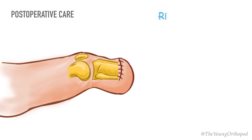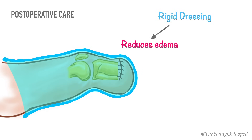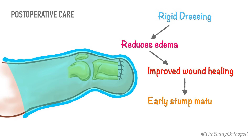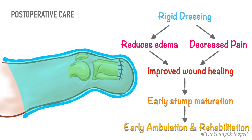Post-operatively, a rigid dressing consisting of a plaster of Paris cast is applied to the stump. Rigid dressings help in reducing edema at the surgical site, leading to improved wound healing and early maturation of the stump. Post-operative pain is also observed to be less with rigid dressings, leading to earlier ambulation and rehabilitation.